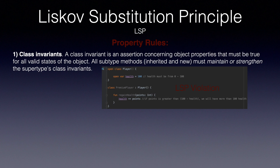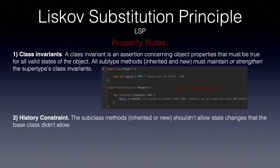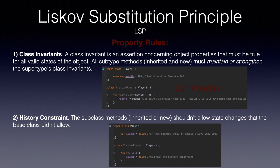Moving on to the history constraint: the subclass methods, inherited or new, should not allow state changes that the base class did not allow. If, for example, a value should be set only during the initialization process of the object, the subclasses shouldn't be allowed to change it later. For example, if our player becomes dead, then he should not become alive again. But we see that a premium player can revive himself — this breaks the history rule.